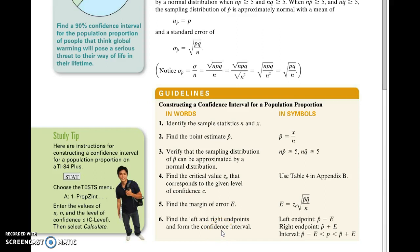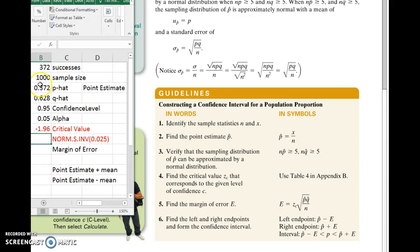Now one thing I skipped over, but you should definitely check each time, is that N times P hat is bigger than or equal to 5 and the same with N times Q hat. Now you take 1,000 times P hat, you get 372, way bigger than 5. And 1,000 times Q hat, 628, again, way bigger than 5. So that means we're good to move forward with this process and we can use the normal distribution to get our critical values like we did already here.